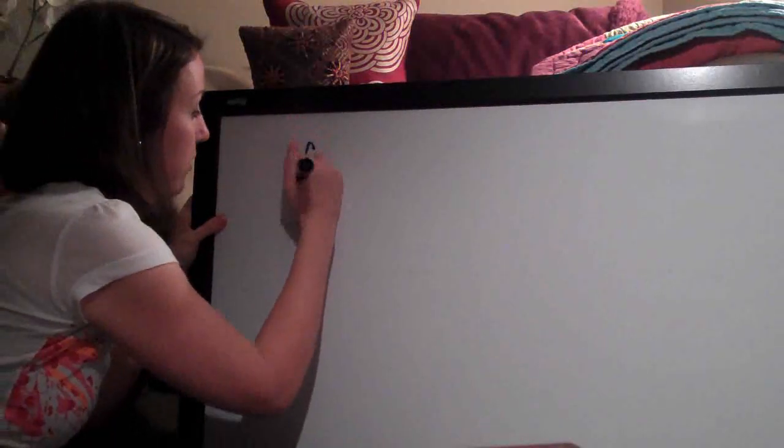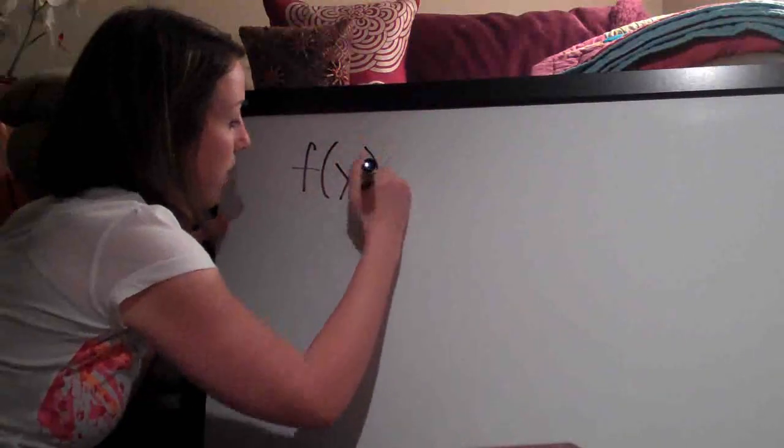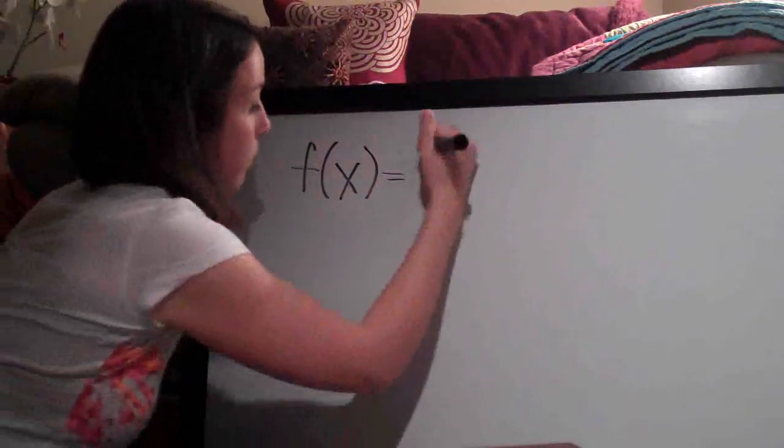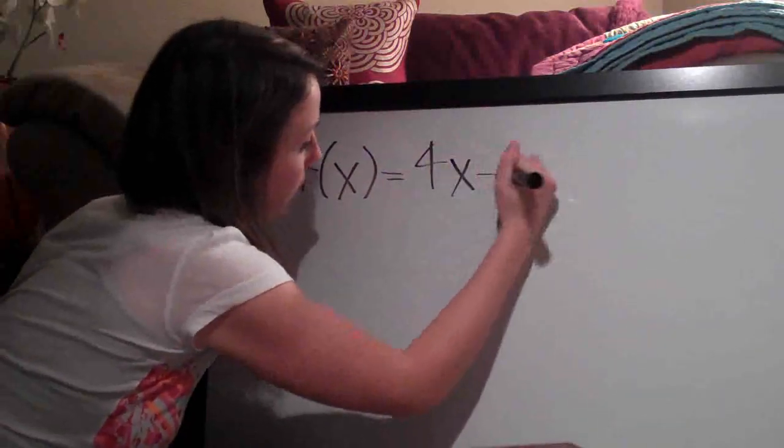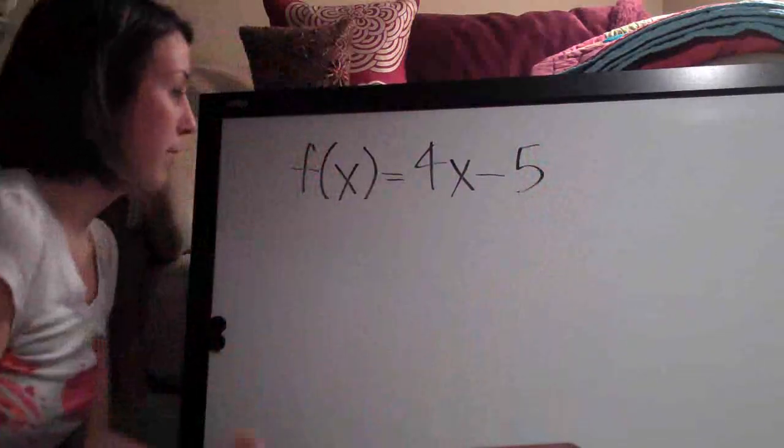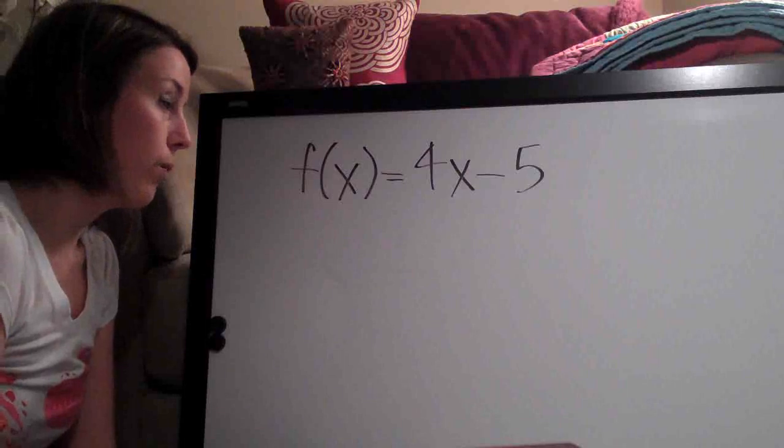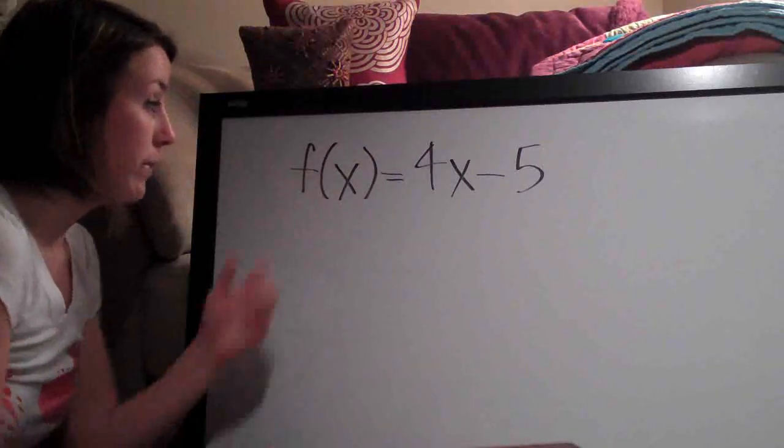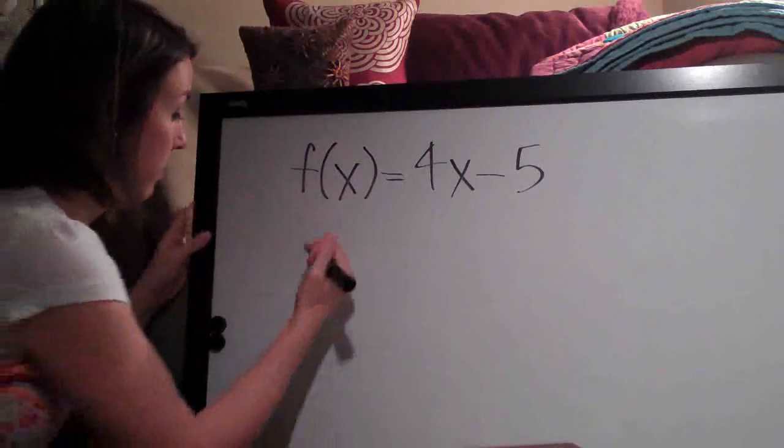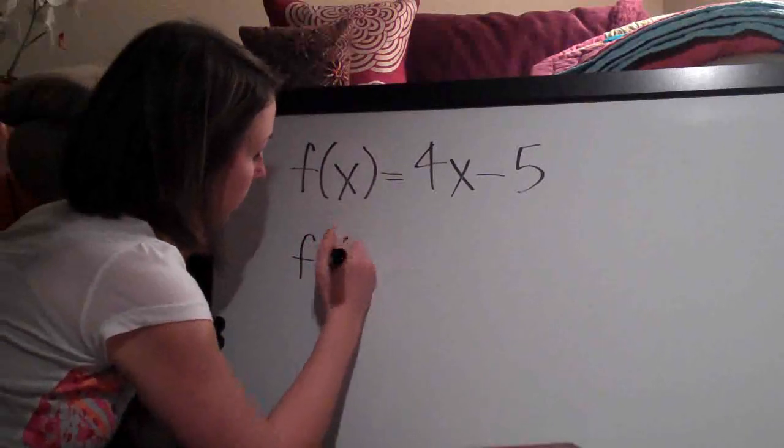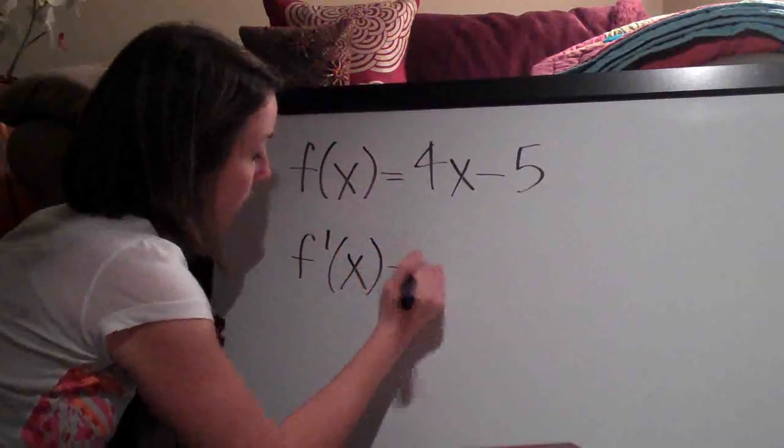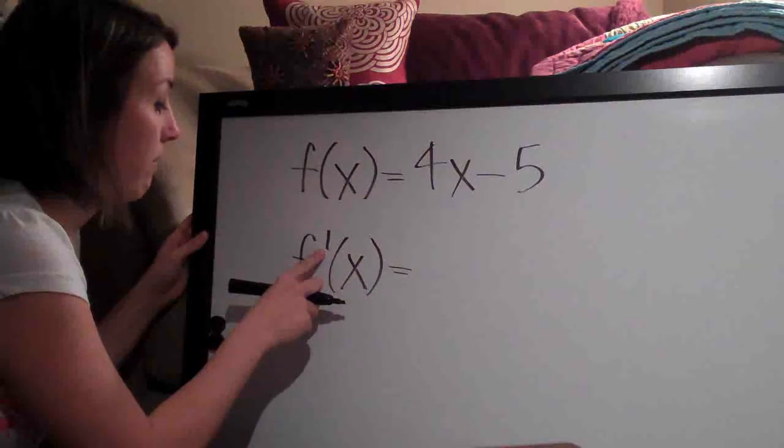So the first problem we're going to do tonight is f of x equals 4x minus 5. Super basic. So the first thing we want to talk about is notation. When we take the derivative of the function f of x, the notation that we write down for the derivative is f prime of x. That denotes the derivative.